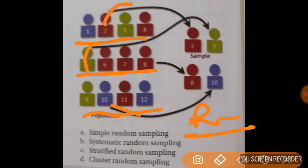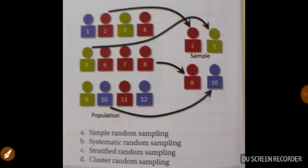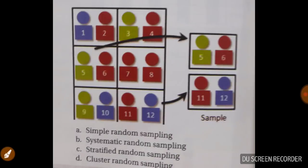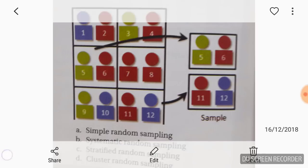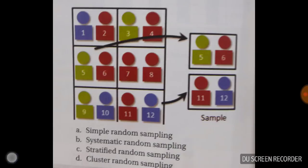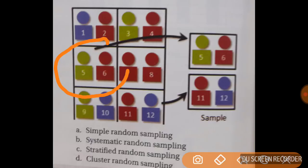What are the methods of simple random sampling if I ask you? So lottery method, random number table, computer software - these are simple random sampling. Now what is this one? So this one is just for your revision, a repeat. Which of the previous questions which I have asked is cluster random sampling. We are taking randomly from clusters.